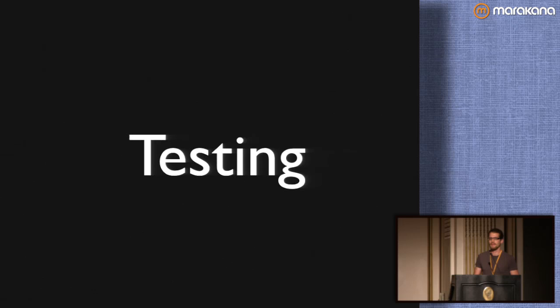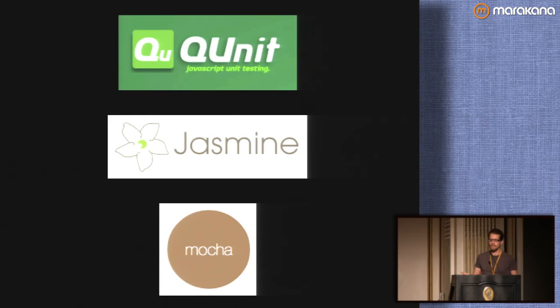Always be testing your code — you should never not be testing your code. It's especially true if you want to distribute a reusable library. You want to make sure your code does as promised, and an automated testing suite is the best way to do that. Think of it as a way of proving that your code does what it says it's going to do. Great tools for this include QUnit, Jasmine, and Mocha. I prefer QUnit because it just kind of works, but Jasmine and Mocha are also very good.